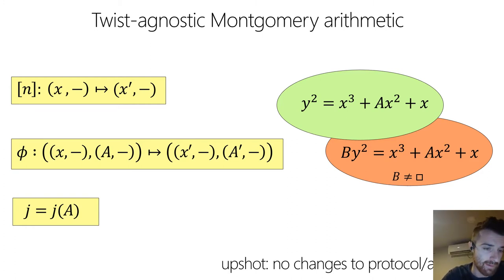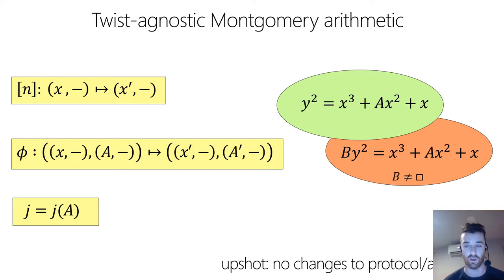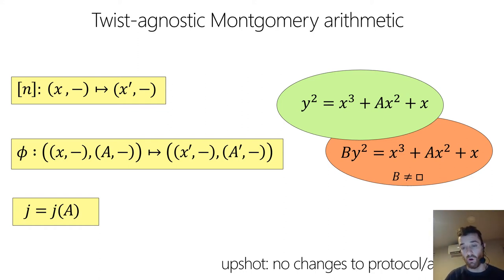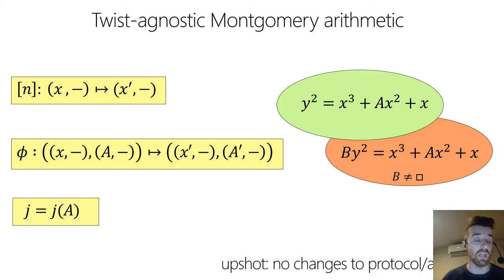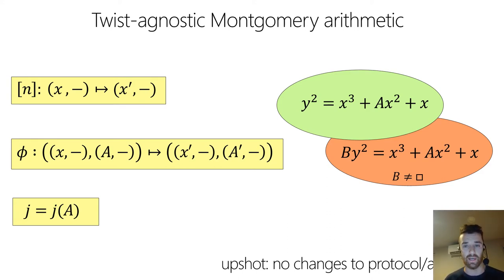The reason the arithmetic doesn't change is that all arithmetic used in state-of-the-art implementations is agnostic to whether you're working on the curve or its twist. The x-coordinate-only scalar multiplications pay no attention to the y-coordinate — they only use x-coordinates and the a-coordinate, which is the same for Alice and Bob on both sides. The same goes for the isogeny arithmetic. The j-invariant of both curves is the same: technically they have different group orders over F_{p²} and aren't isogenous there, but lifting to F_{p⁴} they become isomorphic, which is why their j-invariants agree even over F_{p²}.